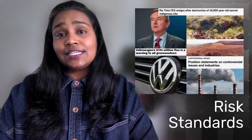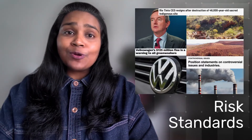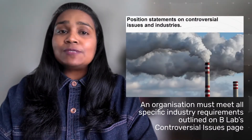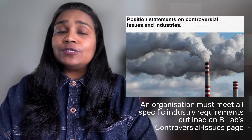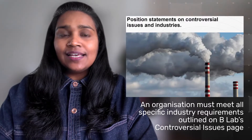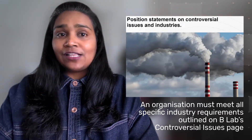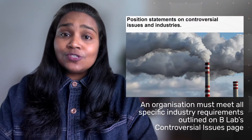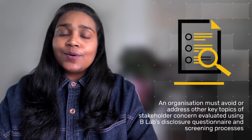This topic is where B Lab would screen companies for potentially negative and controversial practices. All organizations seeking B Corp certification must meet some requirements laid out in the draft standards on this topic. First, an organization must meet all specific industry requirements outlined on B Lab's controversial issues page. Within this requirement, the organization will need to identify any industry or topic where specific standards exist or are in need of development, and meet all existing and developed standards. Note that B Lab continues to develop new specific industry requirements, and affected organizations may not be able to pursue B Corp certification until those new standards are developed and met.